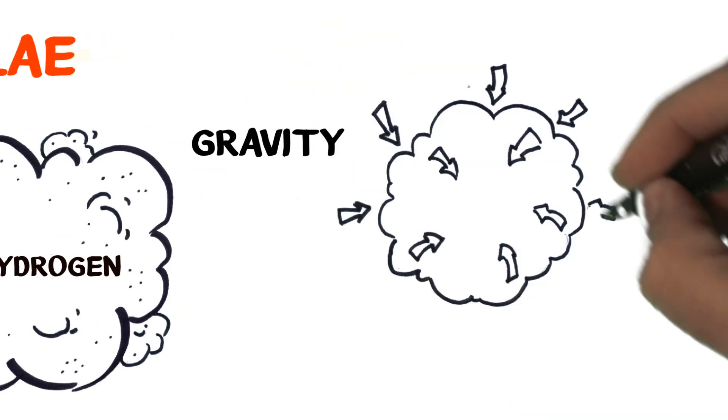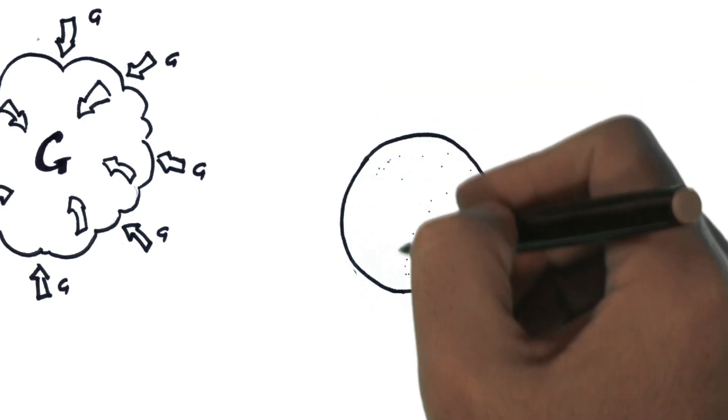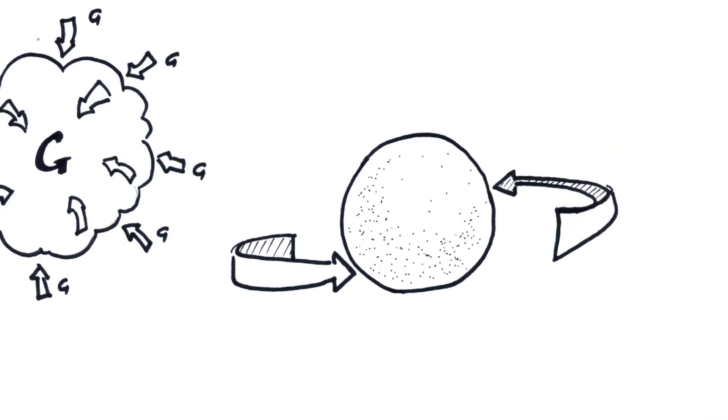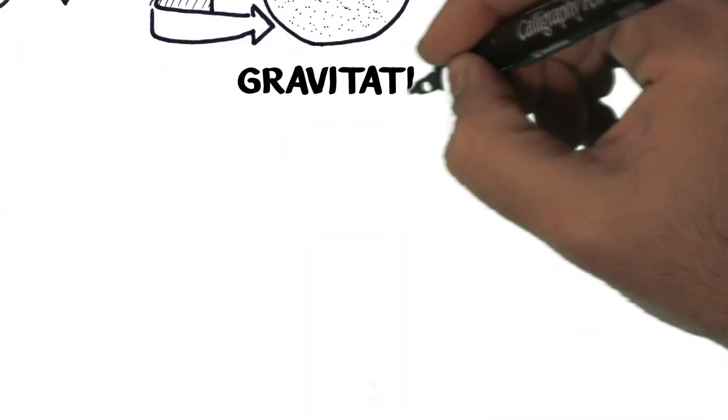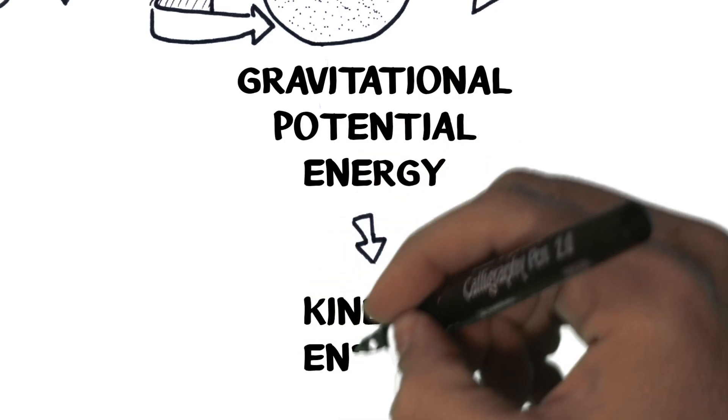Gravity slowly pulls the gas and dust together into huge rotating balls. As particles are pulled together, they are accelerated faster and faster. Gravitational potential energy is being converted into kinetic energy.